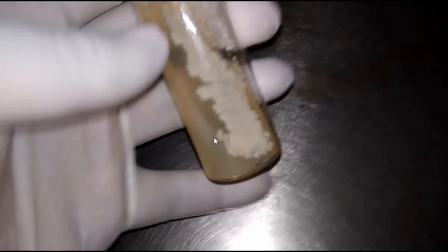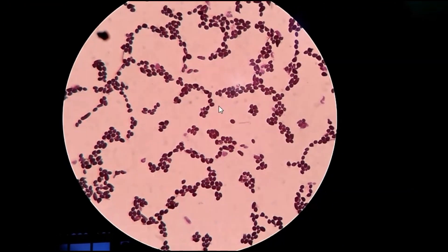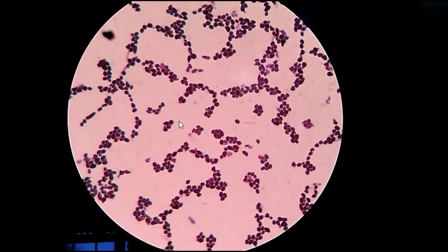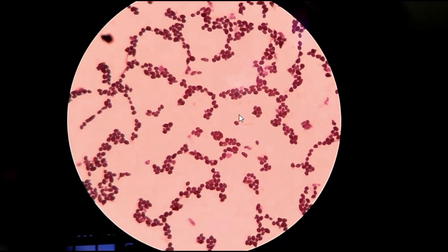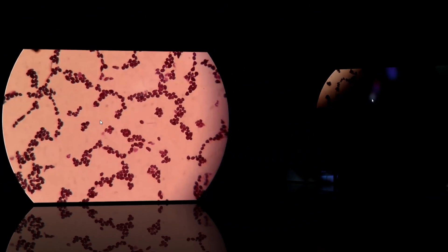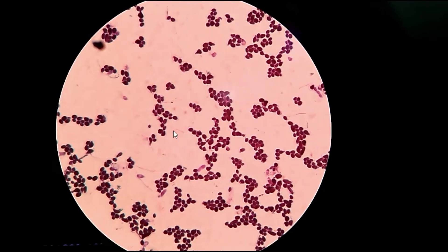A Gram stain was performed from this colony. You can see oval shapes and spherical shapes. As you know, yeast is unicellular, oval